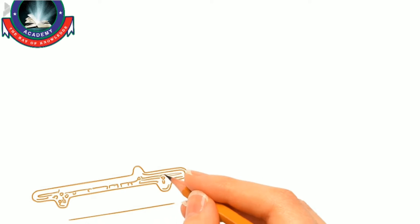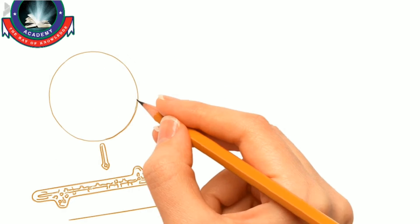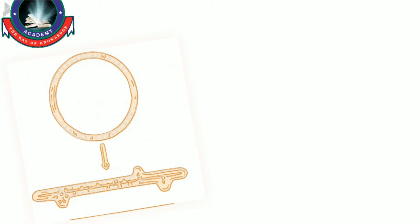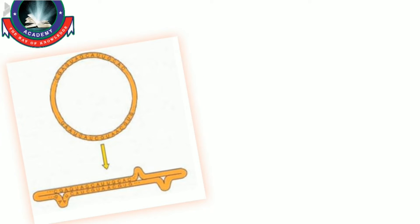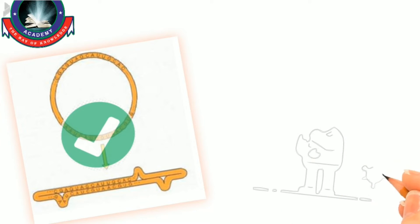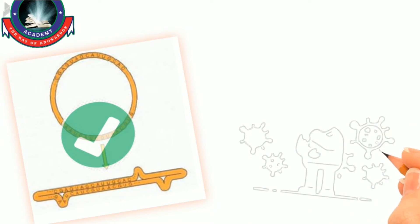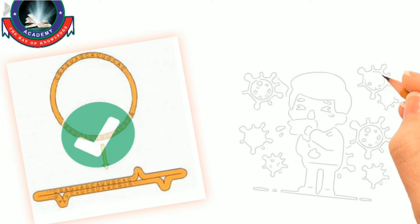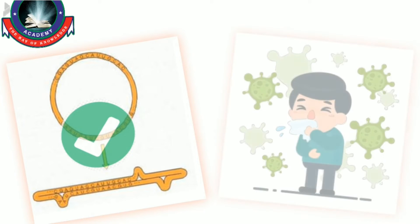The first option is about viroids, which are basically the smallest pathogen. They only have a circular single-stranded RNA and no protein coat. Hence this becomes a correct option. As for Option B, viruses are obligate parasites and they completely depend upon their host to carry out their metabolic functions, so this is correct as well.